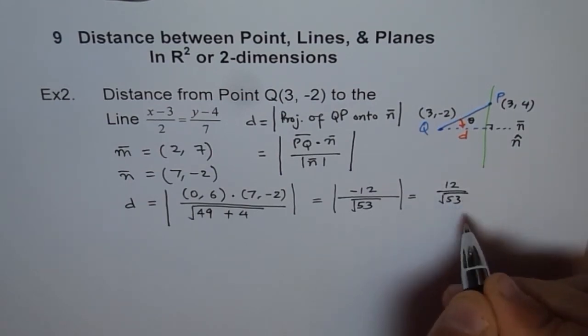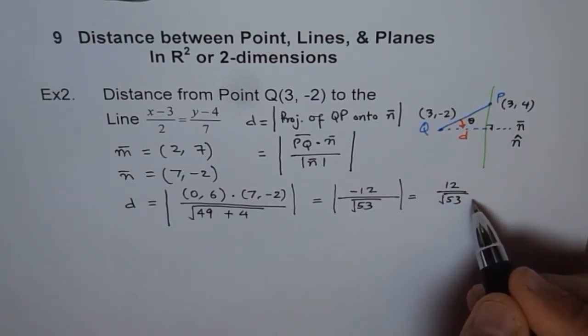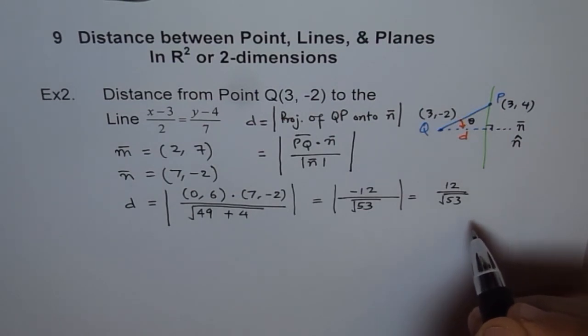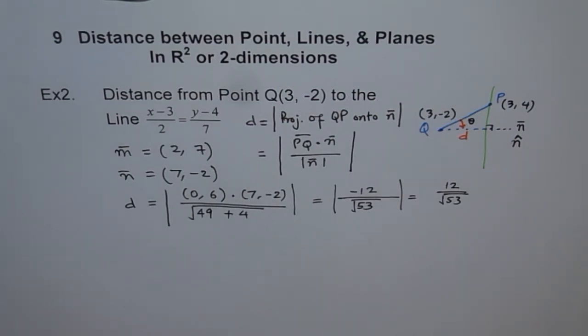At times it is a good practice to rationalize the denominator. So you could multiply and divide by square root of 53 and write down your answer. I will leave it here for the time being. So that is how you find distance, shortest distance from a given point to the line. It is always along the normal. Remember that.